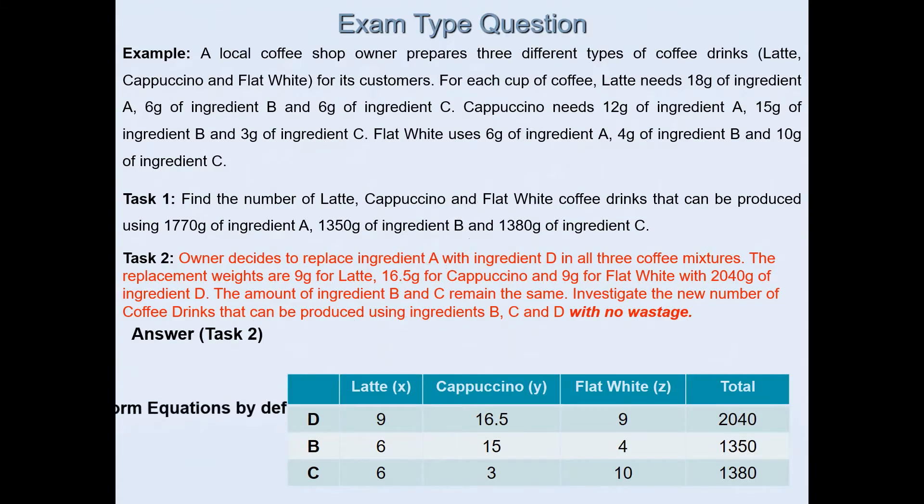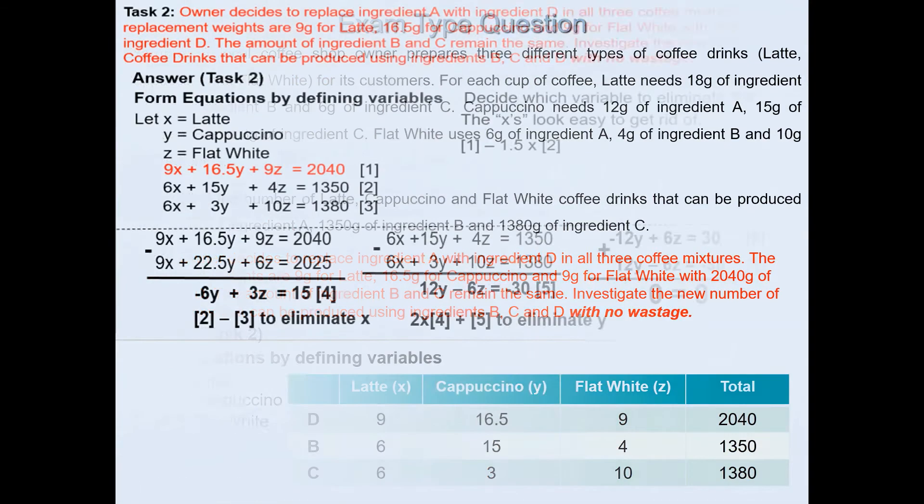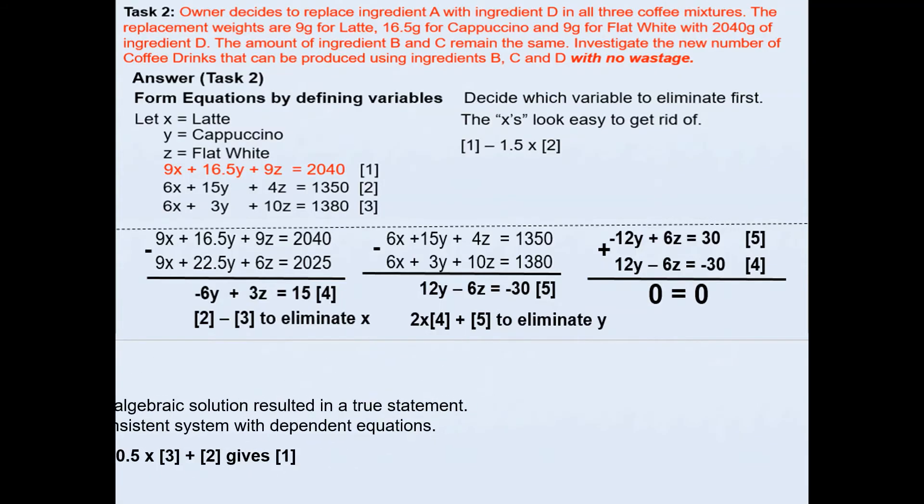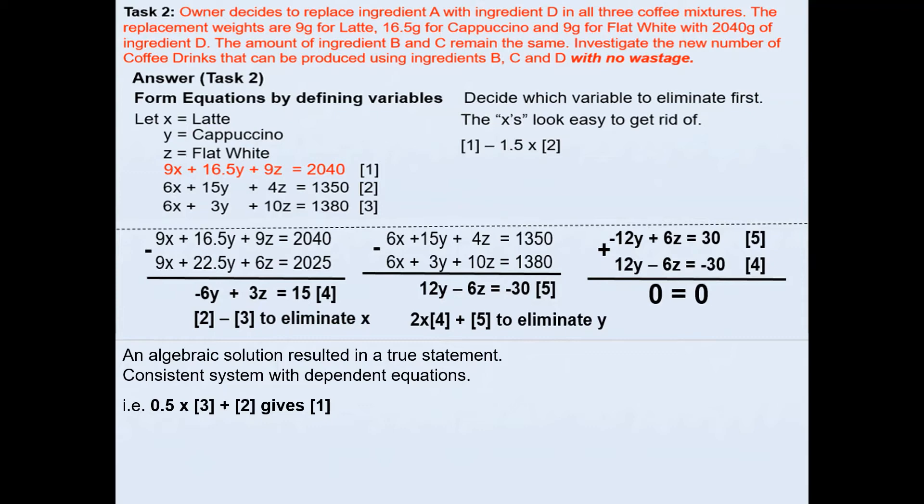We'll form equations by defining variables. In this case, we're letting X be latte, Y be cappuccino and Z be flat white. I've created a table, like I mentioned in my previous video, which makes it easier to form equations. We have already done this part and we ended up with 0 = 0. This is telling us that we will end up with a multiple solution. In this case, an algebraic solution resulted in a true statement, which tells us that we have a consistent system with dependent equations.